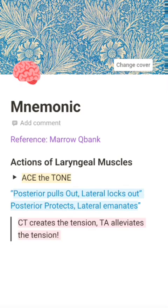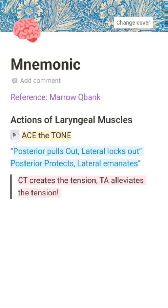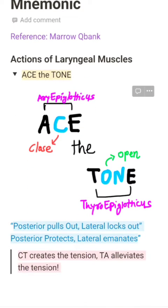The first mnemonic is 'IS TONE.' As you can see in the image, the two end letters of 'IS' stand for aryepiglotticus, and the middle letter C represents closing action. Similarly, in 'TONE,' the letters stand for thyroepiglotticus, and 'ON' represents opening action. So aryepiglotticus closes the inlet and thyroepiglotticus opens the inlet of the larynx.